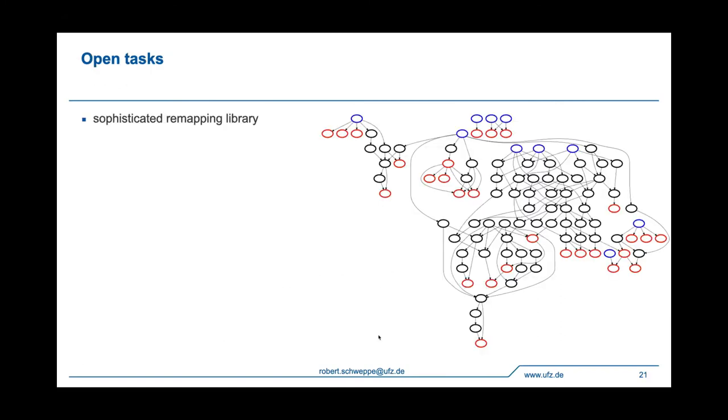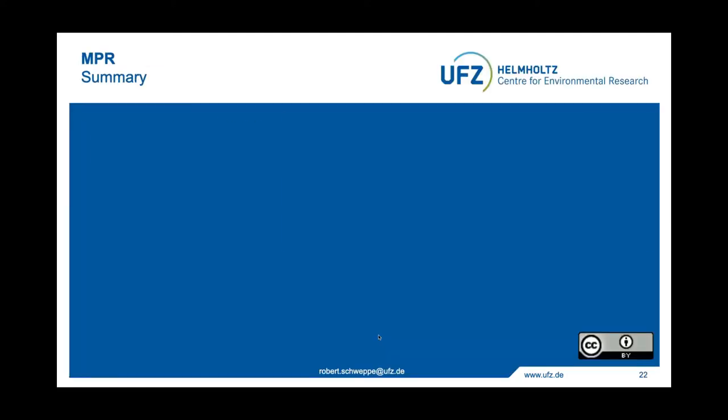So this leads me to my open tasks, and we need to also have a more sophisticated remapping library using different re-gridding methods. The performance needs to be improved, because parallelization was not yet really addressed in the development so far. Unit testing needs to be improved, and the code is currently not yet available, as we first want to have it published in a scientific journal. And this finally leads me to my summary.